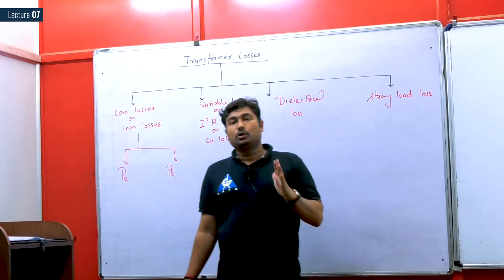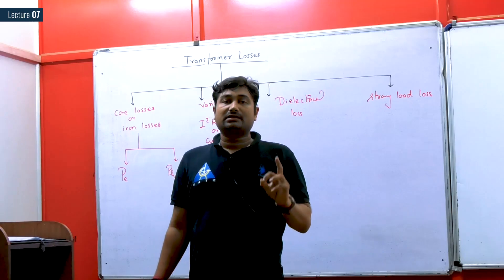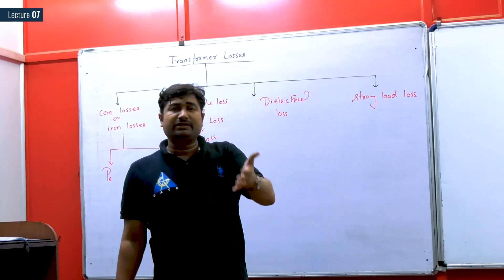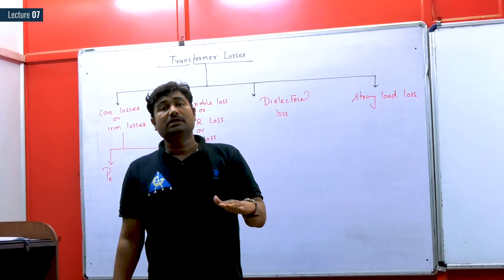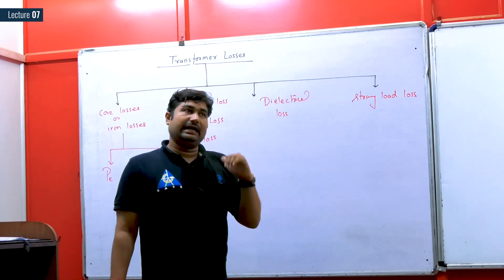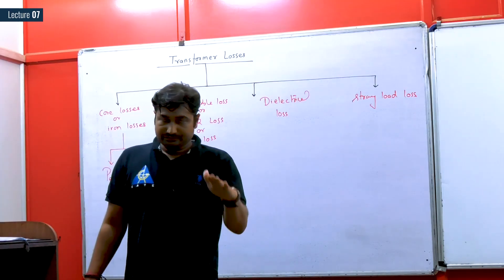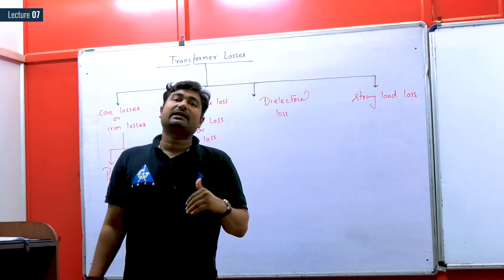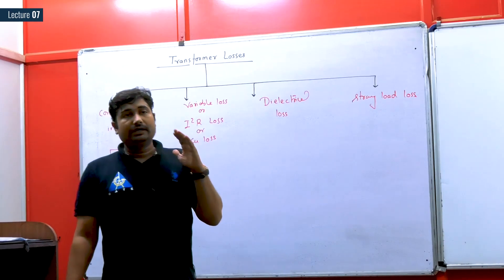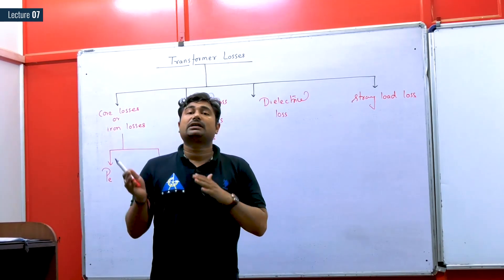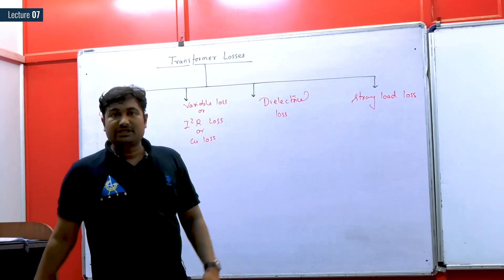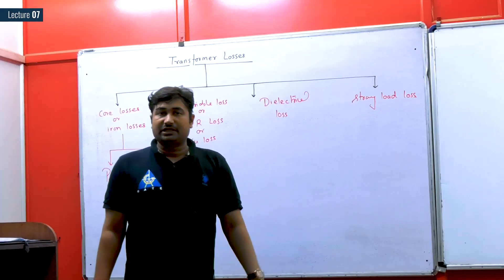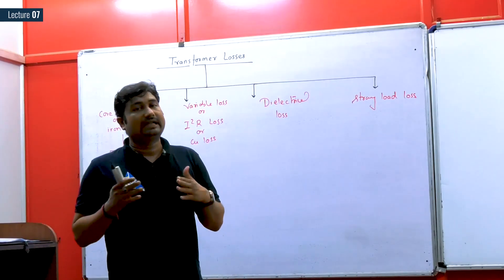Core loss is majorly categorized into two groups: hysteresis loss and eddy current loss. For hysteresis loss, the power is wasted in de-aligning the dipoles which remain aligned due to residual magnetism. The power wasted in removing residual magnetism corresponds to the hysteresis loss, which comes under the BH curve or hysteresis curve. Hysteresis loss is directly defined as the area under the BH curve — wider area means wider hysteresis loss, narrower area means narrower hysteresis loss.